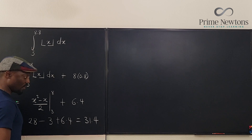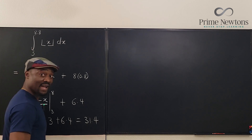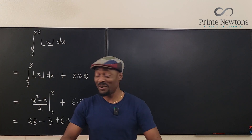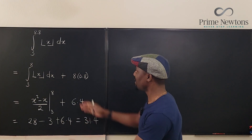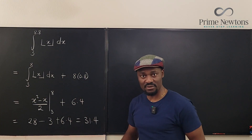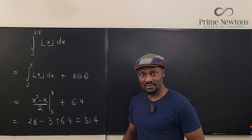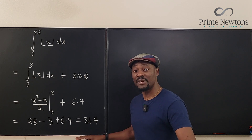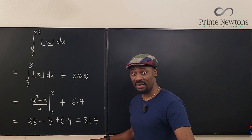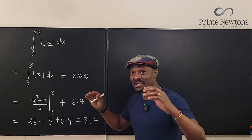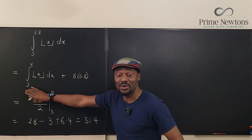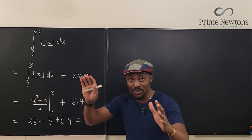The answer is 31.4. That looks like pi! So 31.4 is the answer to this integral, and this is why I recommend you do it this way — it is faster. You can do it from the bottom too, just know what you're doing.